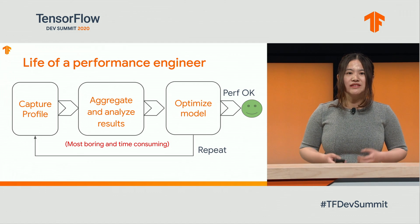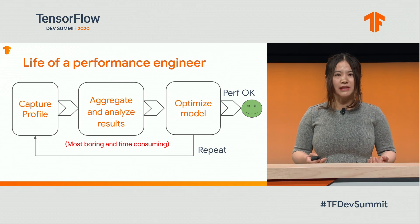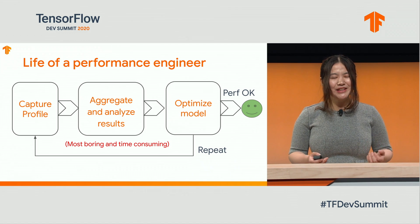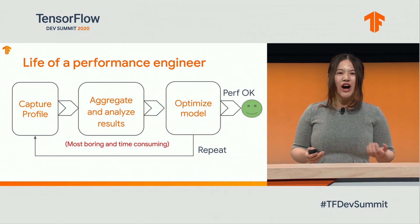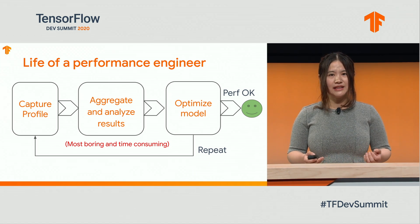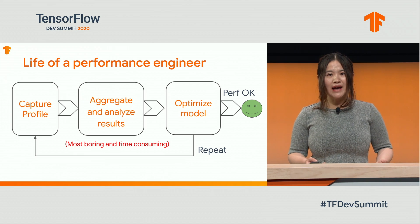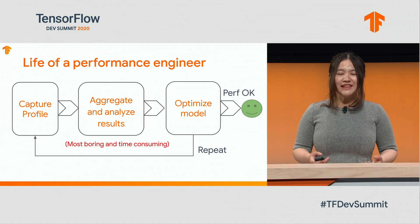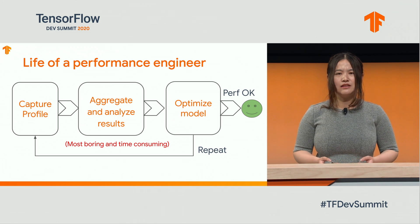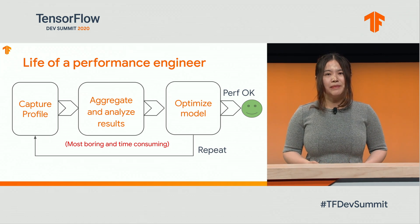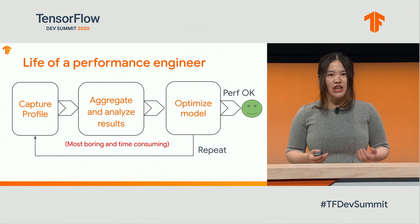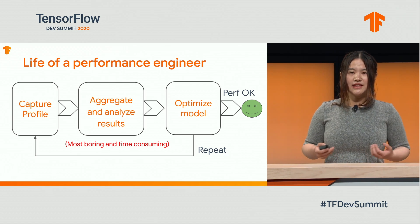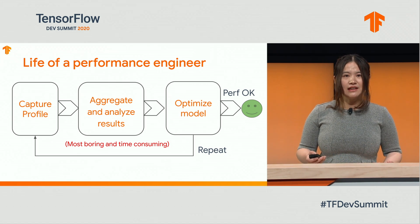We often have gigabytes of traces to process, and doing all of them manually is boring and time-consuming. Then, after that, we'll run the model again to check for performance. If the performance is quite good, hooray, we have done our job — go grab coffee. Otherwise, we'll go back to step one: recapture a profile, gather results, find out the reason, fix it, and try again. Repeat this iteration n times until the performance is good. This is a typical day of a performance engineer.